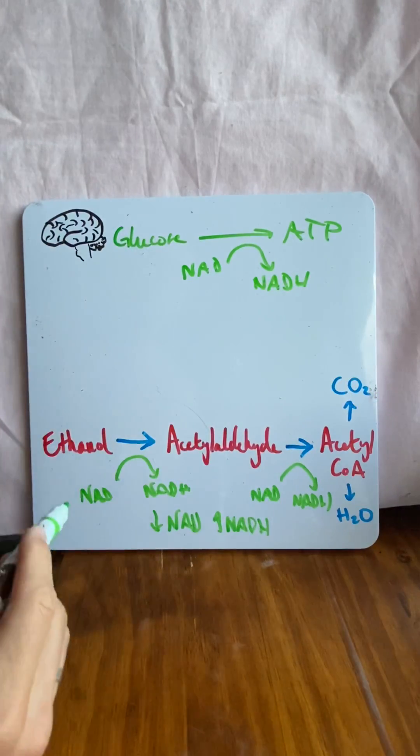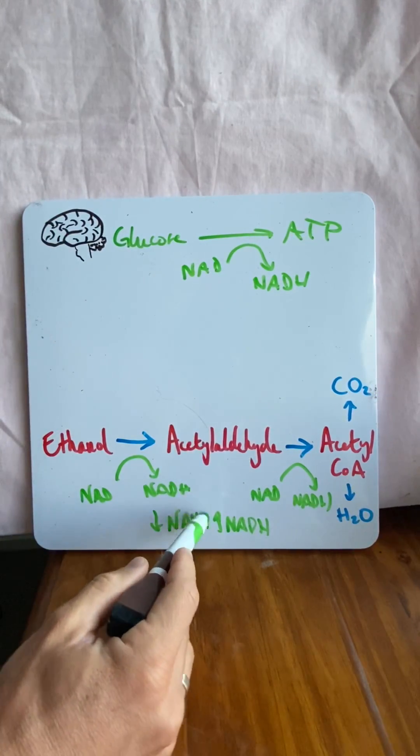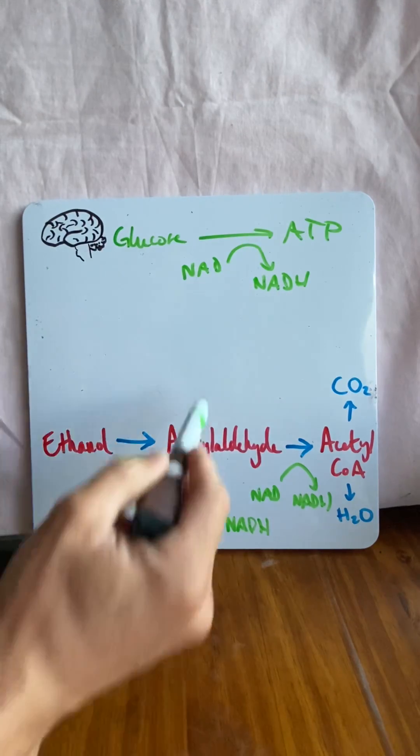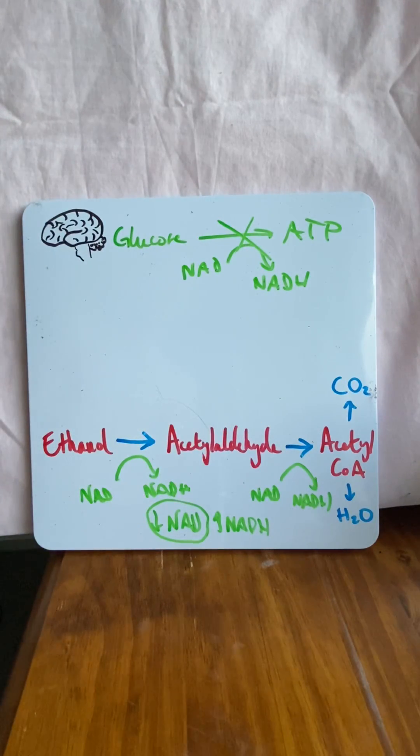All right. But the problem is because you're metabolizing alcohol, you've reduced the amount of NAD available. So you can't undergo this process of glycolysis. Your brain starts to get hungry.